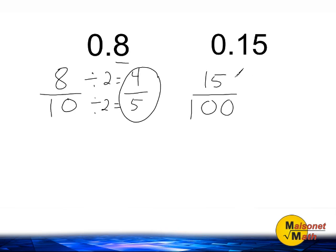And the greatest common factor for 15 and 100 is 5. 15 divided by 5 is equal to 3. And 100 divided by 5 is equal to 20. So we would say that 15 hundredths, reduced in simplest form, is 3 twentieths.